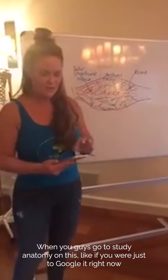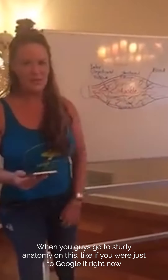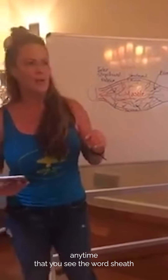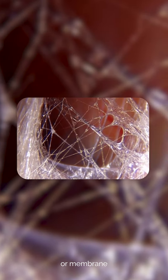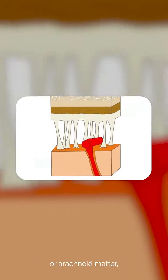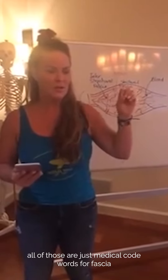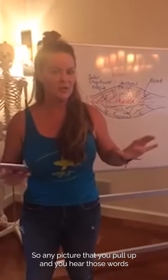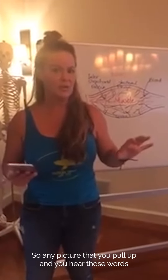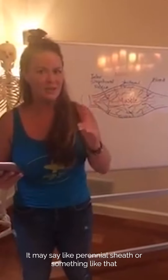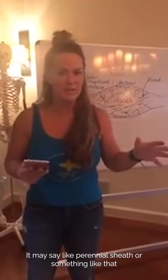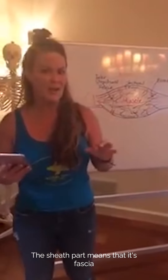When you study anatomy — like if you were to Google it right now — anytime you see the words sheath, membrane, connective tissue, or arachnoid matter, all of those are just medical code words for fascia. So any picture you pull up may not say fascia; it may say something like perineural sheath. The sheath part means that it's fascia.